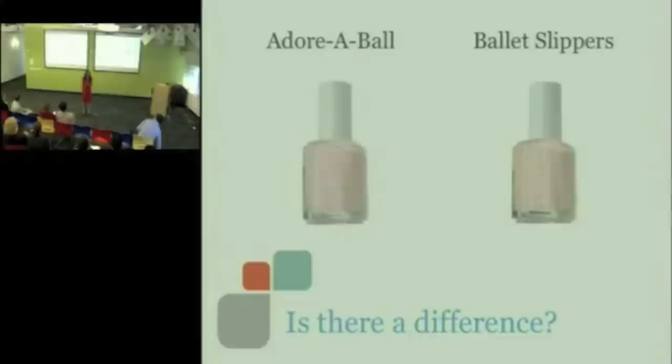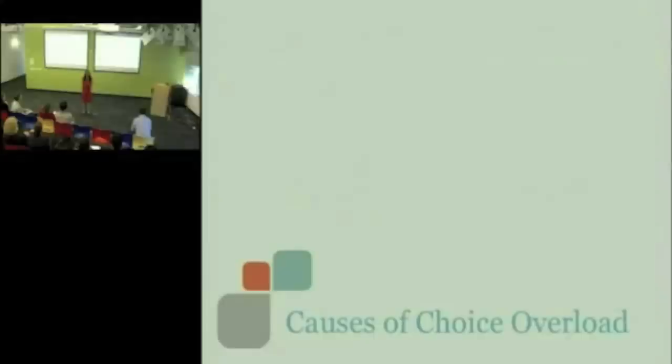Now, when I put the labels back on, invited a whole bunch of other women and asked them which one would they pick, now more of them chose ballet slippers. Who says that a rose by any other name would have actually not smelled differently? So, why is this happening? Well, this brings me to the second cause of choice overload, which is that so often the differences between the choices are so small. And yet we feel compelled to deliberate on those differences and figure out which one is the one I should choose.